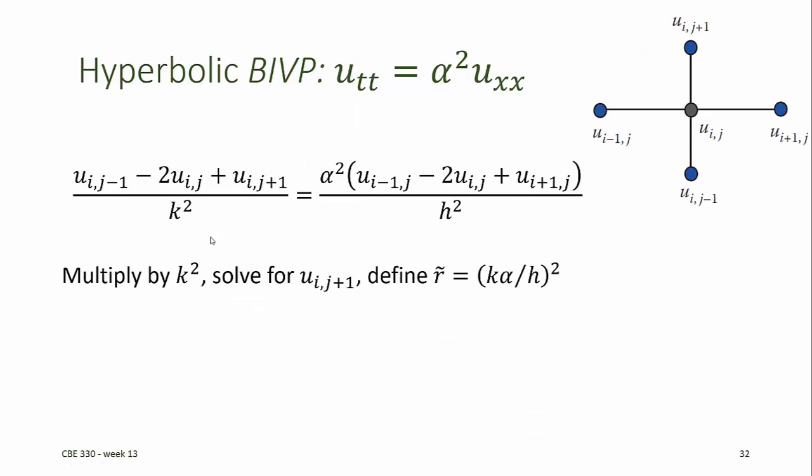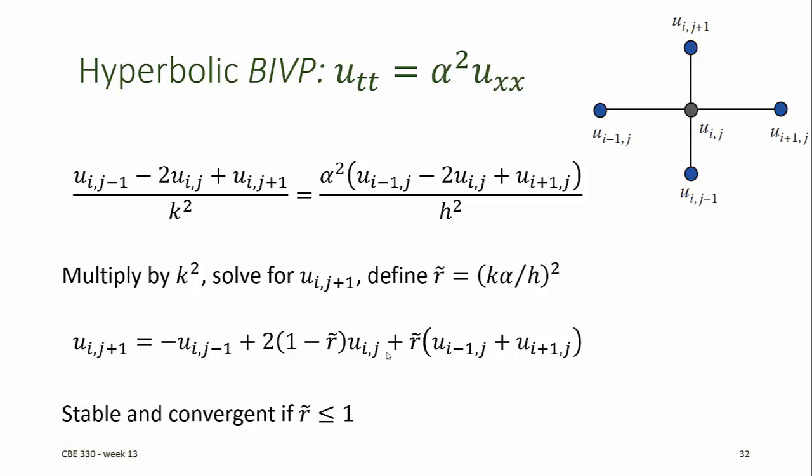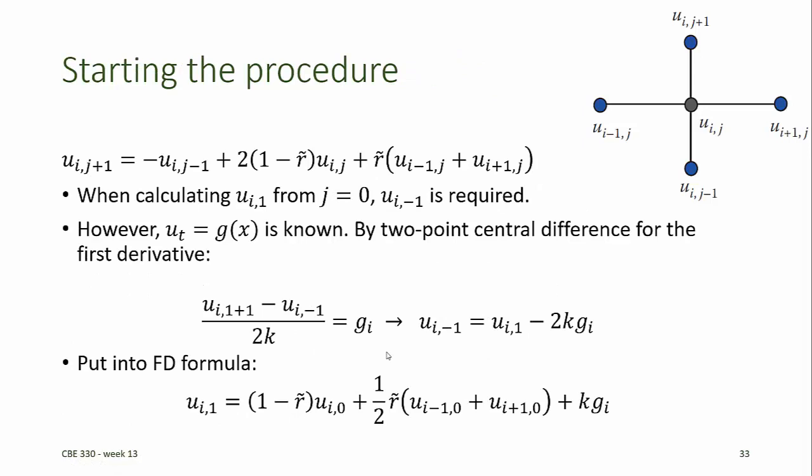This finite difference equation can be multiplied by k squared and solved for u at i, j plus 1. If we define the parameter r tilde as k alpha over h squared, that simplifies the equation. And future values of u in row j plus 1 can be computed from previous values of u in the j minus 1 and jth rows. This will be stable and convergent if r tilde is less than or equal to 1.